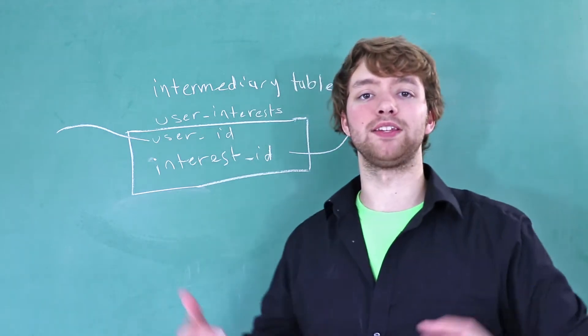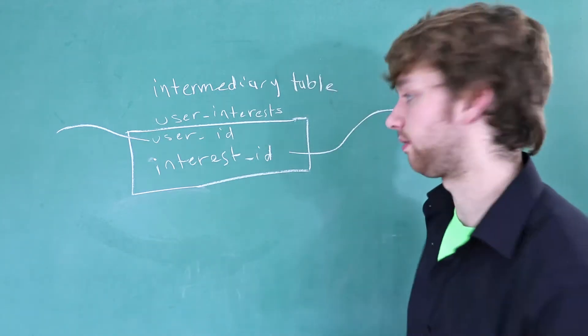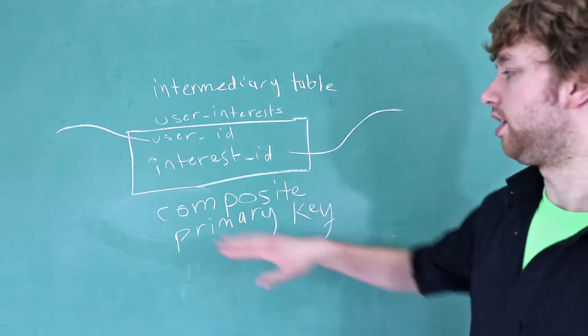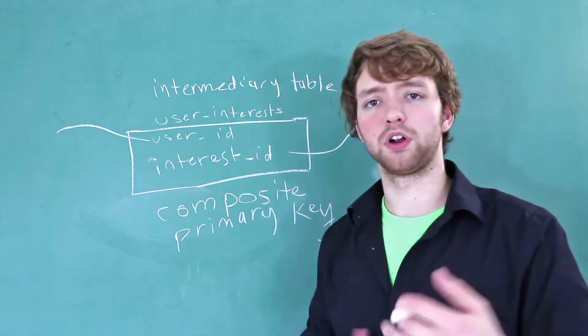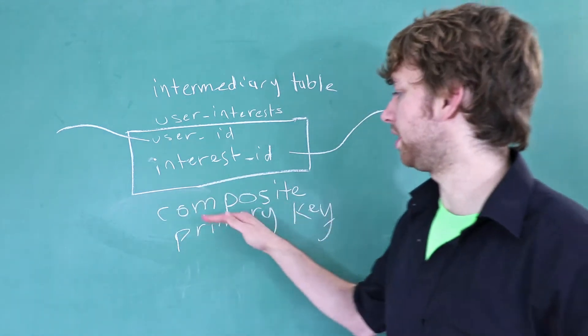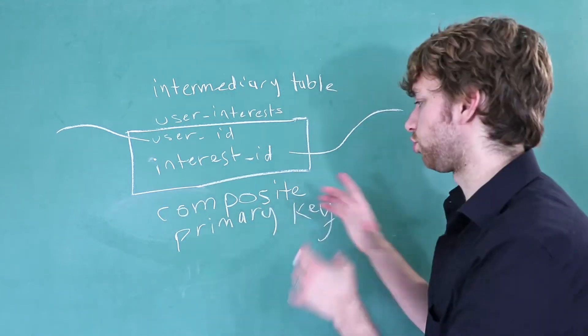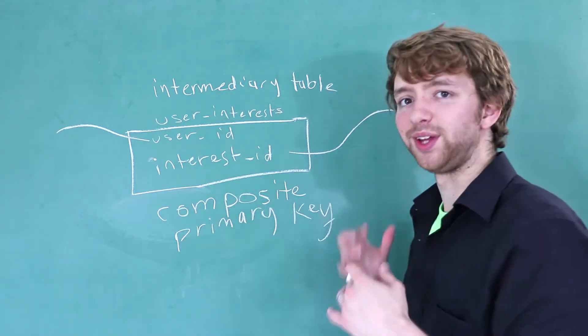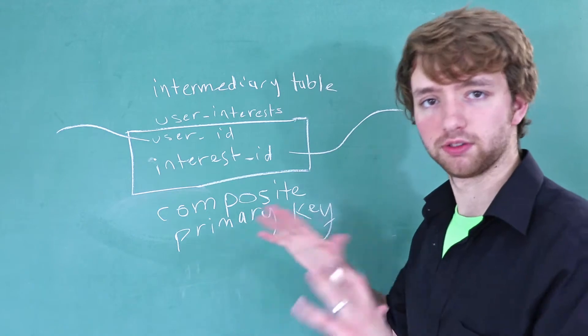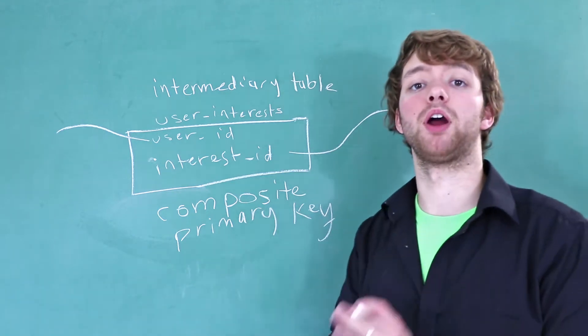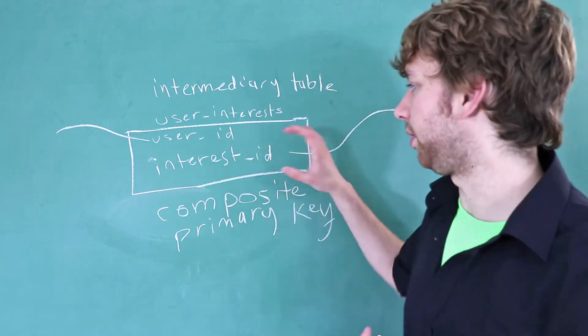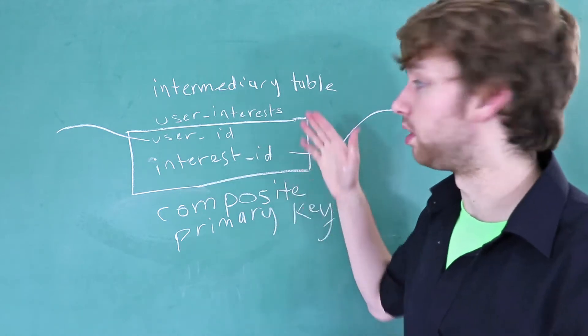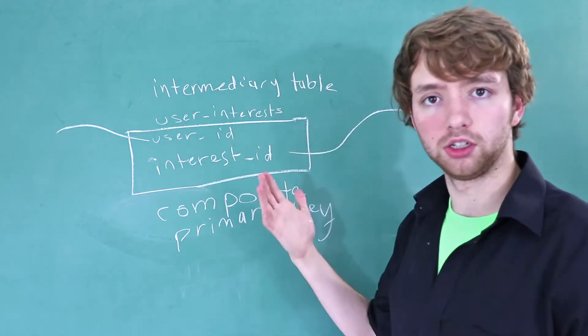It's when you have something known as a composite primary key. Now a composite primary key, the word composite is just a fancy word for humans to use, but the database doesn't actually use that word. So just know that when I say composite that's not a keyword. It's just a word to describe the type of primary key. And that type of primary key is the combination of multiple primary keys or just columns.